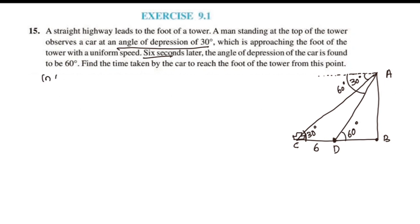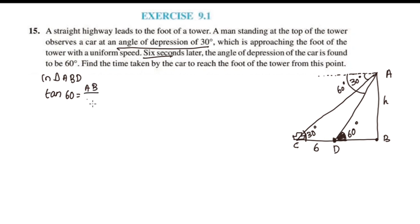We label the points A, B, and D. In triangle ABD, Tan 60 is equal to AB by DB. Tan 60 is root 3, so root 3 is equal to AB by DB.